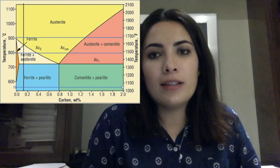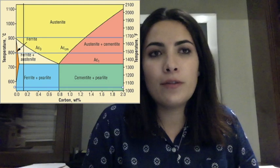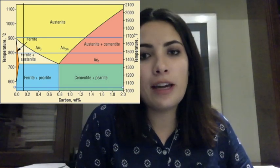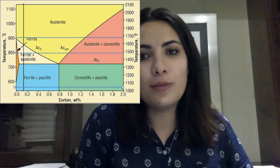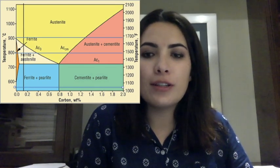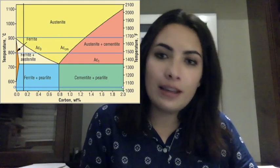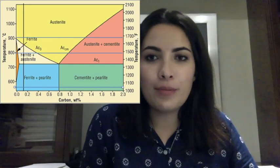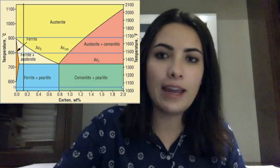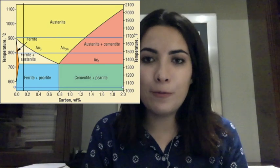We set aside one piece, leaving two. We then raised the temperature again to 800 degrees — as you can see in the blue line — reaching the ferrite plus austenite area. We quenched those pieces in water, dropping back to about 50 degrees in the ferrite plus pearlite area, and then set aside another piece, leaving only one.